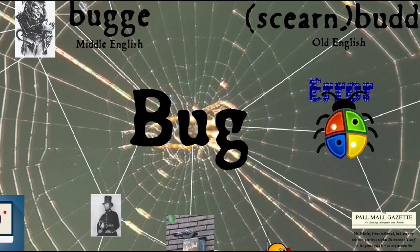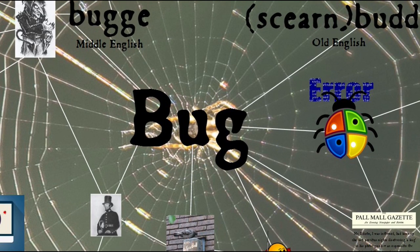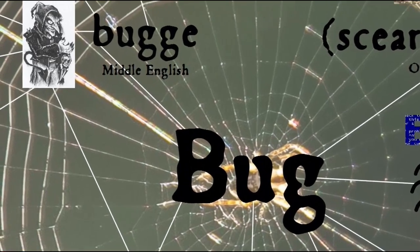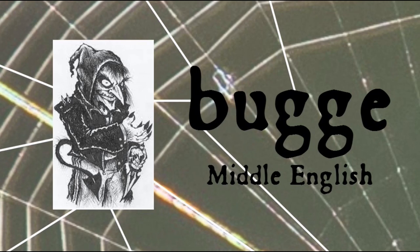For such a simple seeming word, bug has a remarkably complicated origin story, coming it seems from at least two sources, the first being British folklore. In Middle English, the word bug referred to a terrifying creature out of folklore, like a hobgoblin.